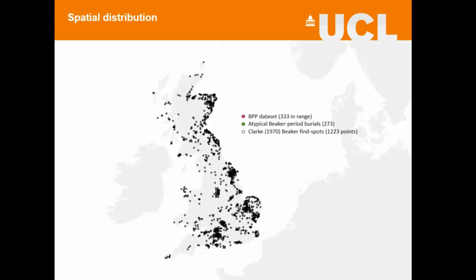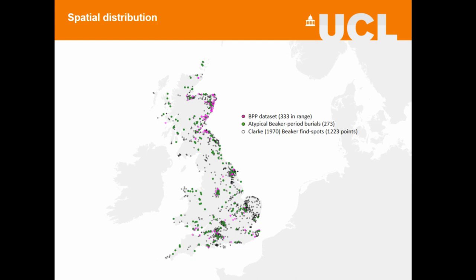As an overview of what I've found so far: this is the distribution of Clarke's 1970 Beaker Corpus — while obviously a bit old, it gives a fairly good indication of the presence of Beaker material culture across Britain. This is the Beaker People Project data set, with 333 burials from the right time period, which is very biased in terms of its distribution for various regions. My data set is 273 burials so far across the period which I've deemed atypical — they don't match our expectations of what a Beaker burial should look like. They are more broadly distributed than the Beaker People Project data set, but more closely aligned to Clarke's, so most atypical burials are found in places where we expect typical Beaker burials.